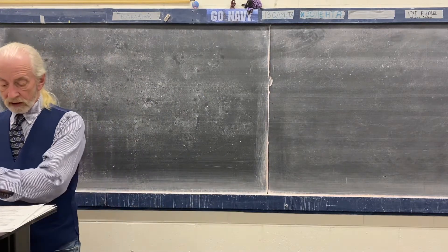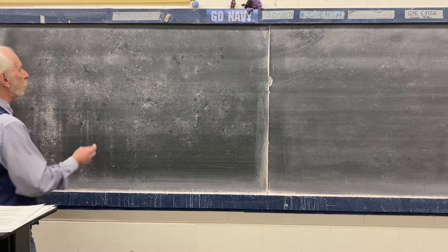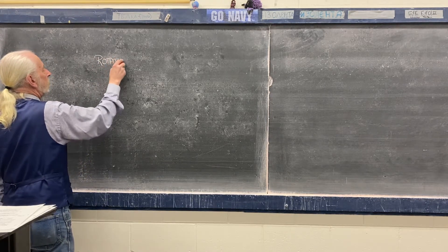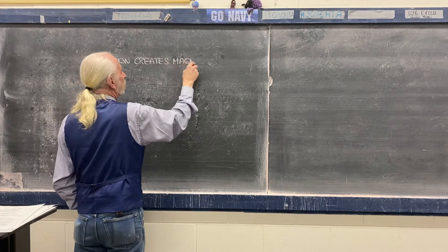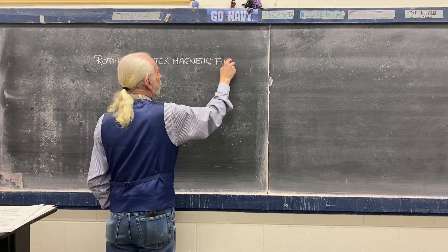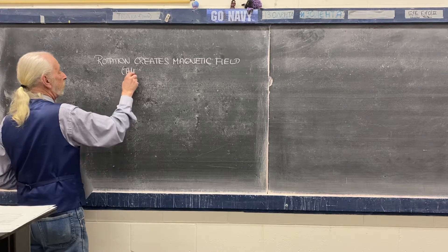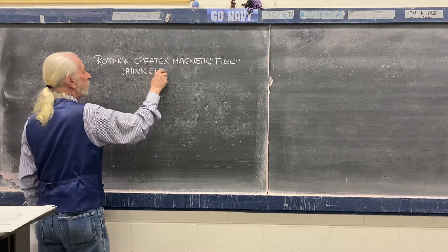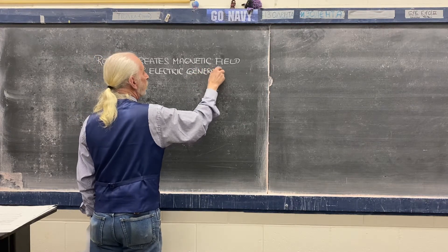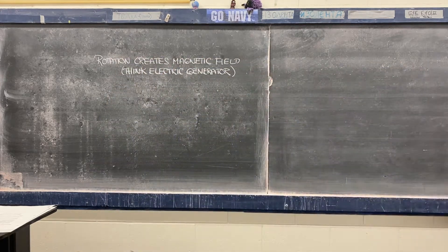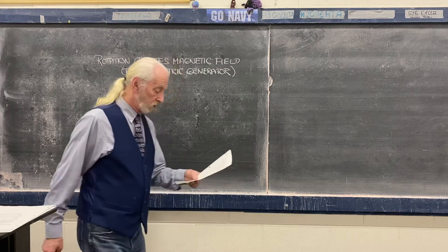And this rotation is something similar to an electric generator. The rotation creates a magnetic field. Think of an electric generator. Now, right now, the Sun, our sun, has a 30-day rotation, roughly a 30-day rotation.